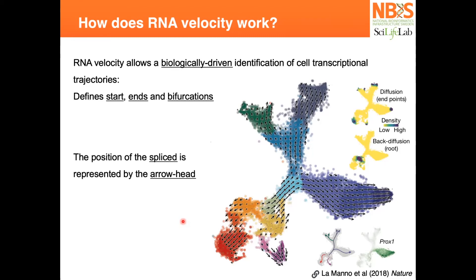It works better with SmartSeq data, but it also works better with more cells. The cost of doing more cells with SmartSeq versus how much better gene detection you get — I'm not sure if that's been properly evaluated. But my feeling is that more cells is more important, and one reason is having intermediate cell states, which allows the arrows to point in the right direction.